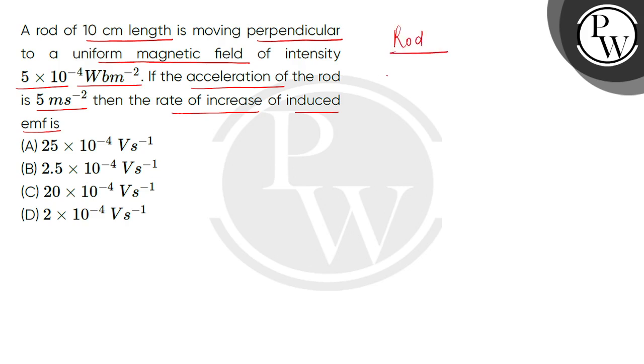We have a rod with length 10 cm, so this is 10 × 10^-2 meter, which means the length is 10^-1 meter.